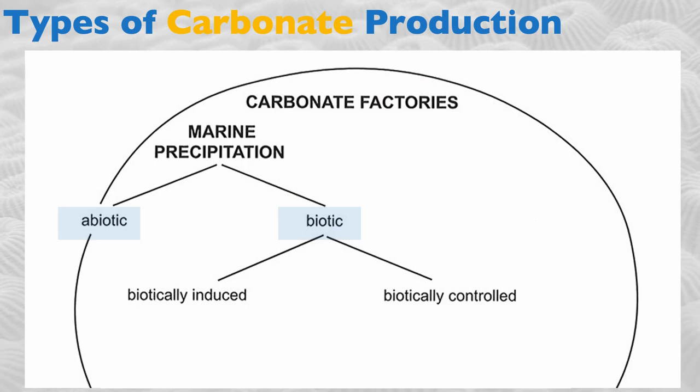Within biotic precipitation, we can distinguish two types. One is known as biotically induced precipitation, and the other is known as biotically controlled precipitation. We'll look at both cases.